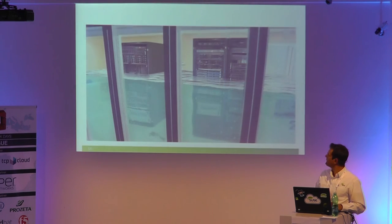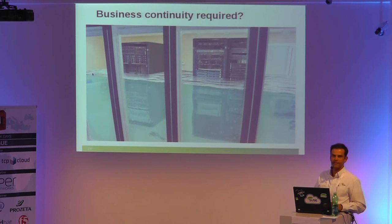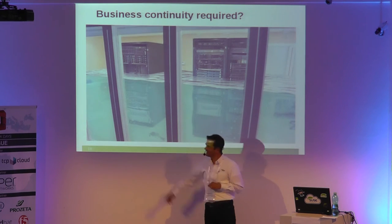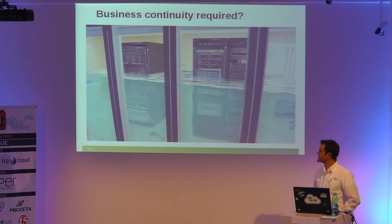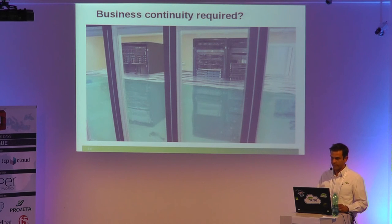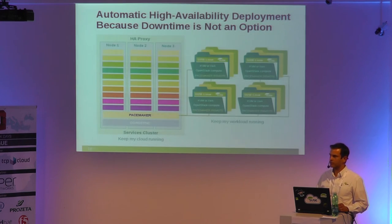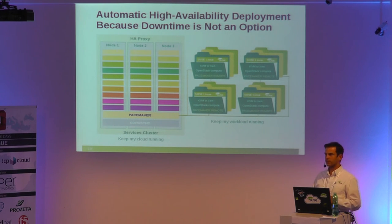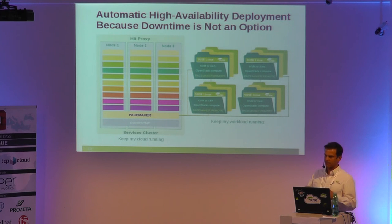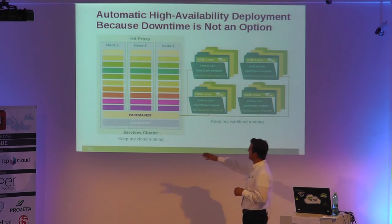Regarding high availability and business continuity — is that required in enterprises? OpenStack is nice, but it doesn't natively provide all the tools you would require for mission-critical applications. SUSE has supported the HA project for many years. Since OpenStack requires high availability, we just took our product and integrated it into the OpenStack solution. So now you can really build a highly available platform for your services, setting up three control nodes under PaceMaker very easily.